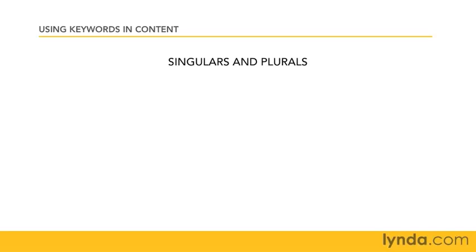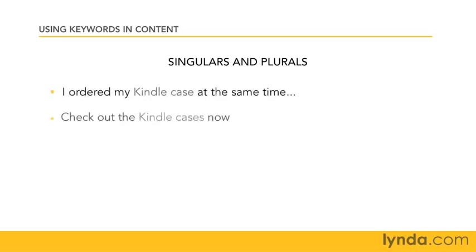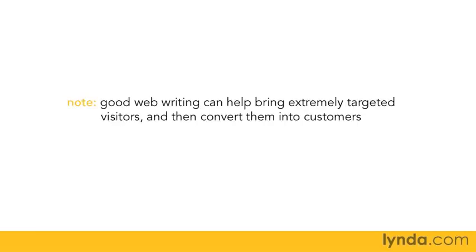I'm often asked how people can use both plurals and singulars of a phrase on the same page — I'm not quite sure why people think it will be difficult, as we do it all the time when speaking or writing. Here's a quick example: on the page you could say 'I ordered my Kindle case' using the singular, and then somewhere else on the same page it might say 'check out the Kindle cases.' It's pretty simple to use both forms within the same page.